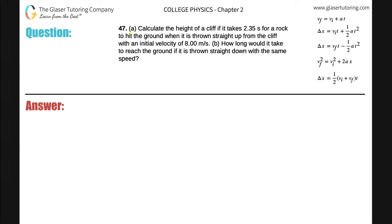Number 47, letter A: calculate the height of a cliff if it takes 2.35 seconds for a rock to hit the ground when it is thrown straight up from the cliff with an initial velocity of 8 meters per second.